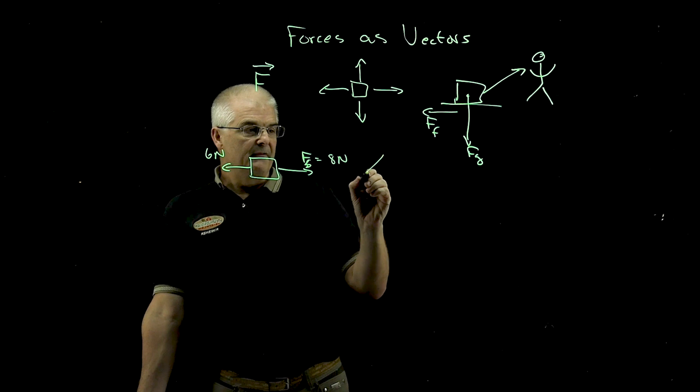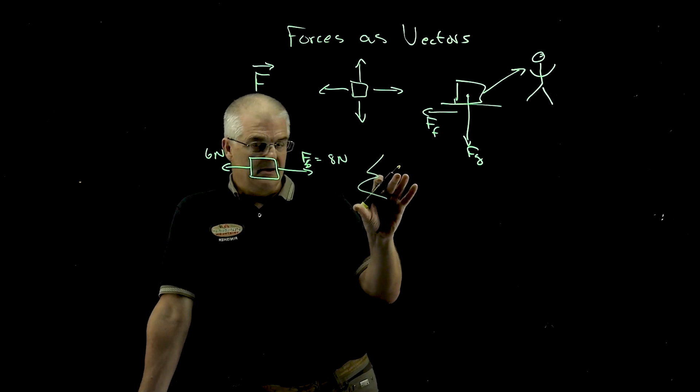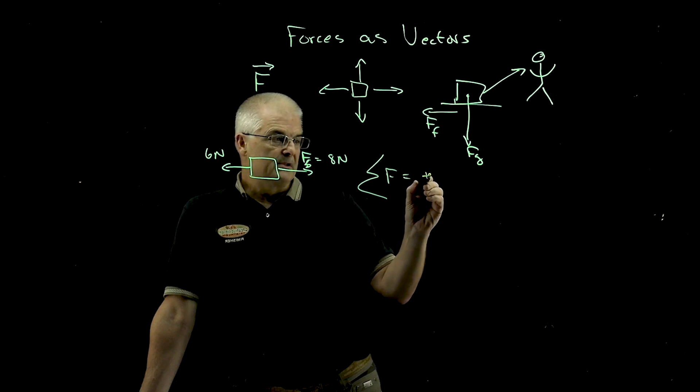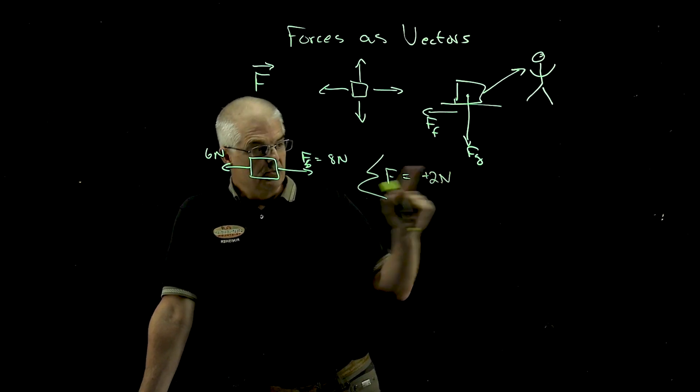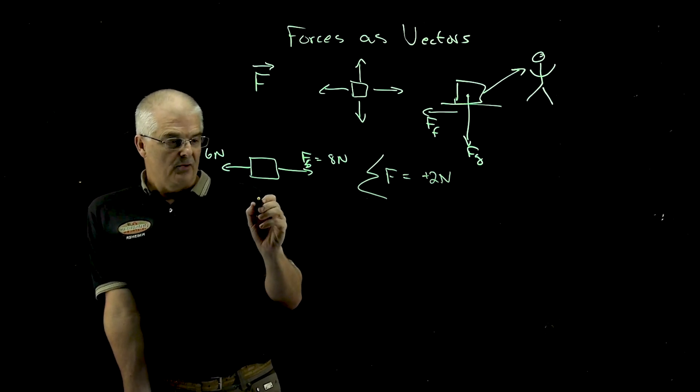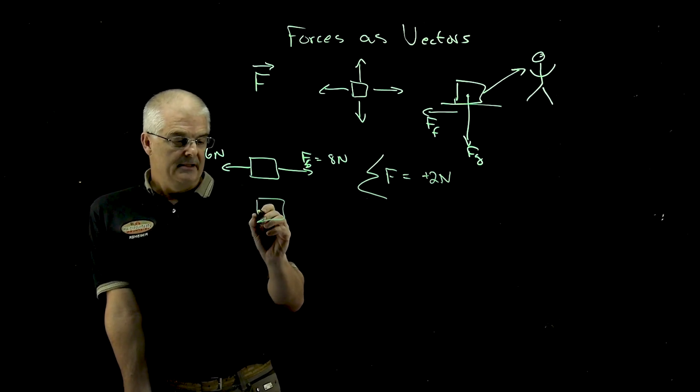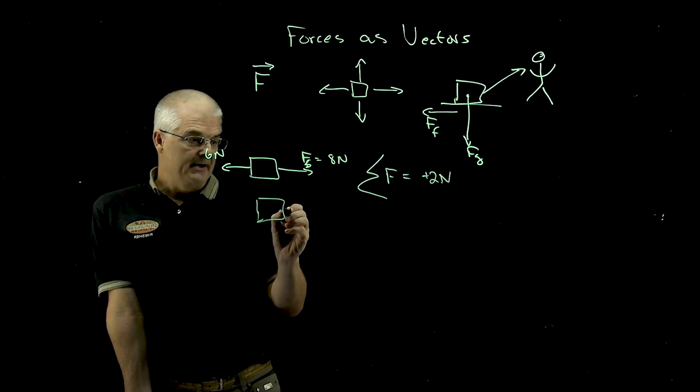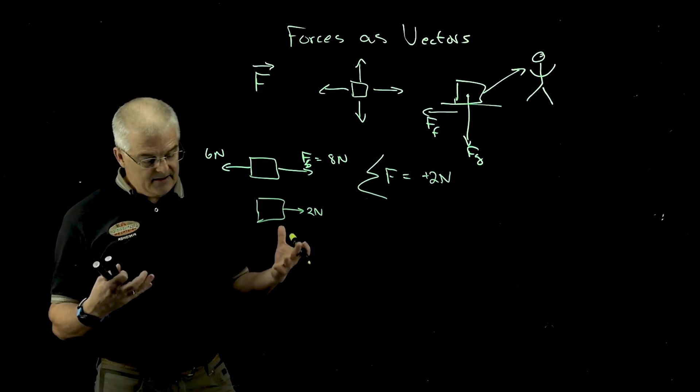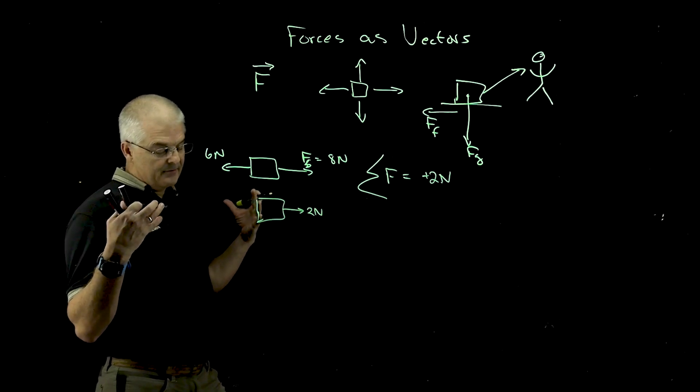And we use a big fancy symbol. This is the sum of, that's a mathematical symbol. The sum of the forces, in this case, would be equal to positive 2 newtons, right? Because it's moving to the right. And so the actual force, if we were to draw a diagram, we'll call this a free-body diagram, is the overall net force is 2 newtons to the right. It makes sense. They're additive, but they're additive vectorally.